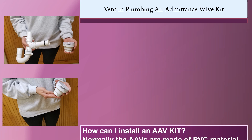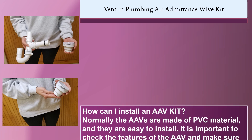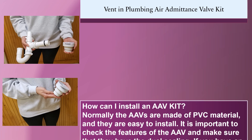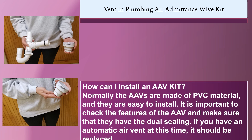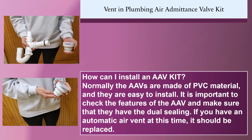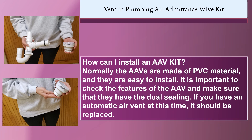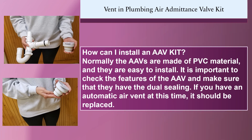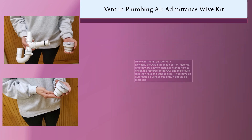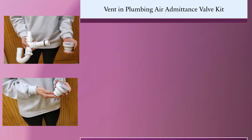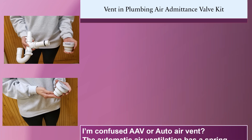How can I install the AAV kit? Normally, AAVs are made of PVC material and they are easy to install. It is important to check the features of the AAV and make sure that they have the dual sealing. If you have an automatic air vent at this time, it should be replaced, but we will talk about that in the second section.